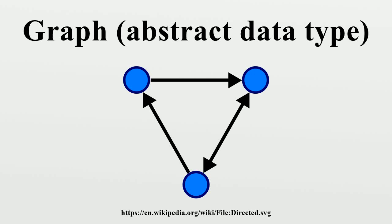In computer science, a graph is an abstract data type that is meant to implement the undirected graph and directed graph concepts from mathematics.